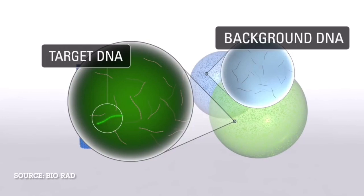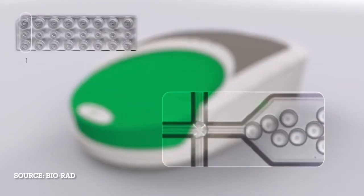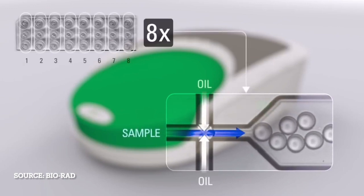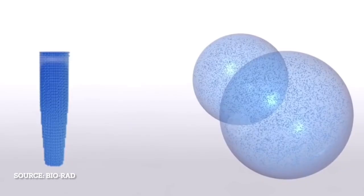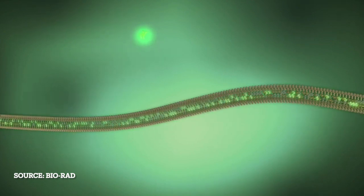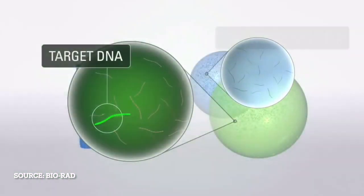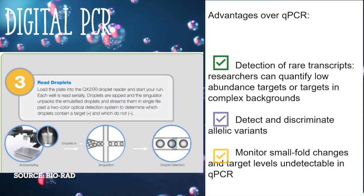The sample is prepared like you would for qPCR, and then the sample partitioning is divided into thousands of individual reactions where amplification is unique to digital PCR by random distribution of molecules into partitions, unlike the bulk analysis in qPCR. Digital PCR minimizes the effects of competing targets and enhances the precision and sensitivity power of detection, particularly of rare events. It allows researchers to quantify low abundance targets or targets in complex backgrounds, detect and discriminate allelic variants, and monitor small fold changes in target levels that are otherwise undetectable by qPCR.